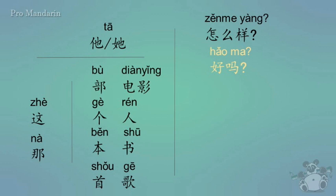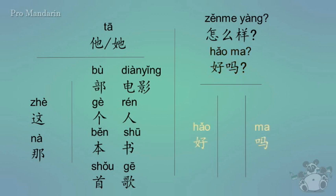You can use hǎo ma for any of the pronouns when talking about someone. Nǐ hǎo ma means how are you doing. Nǐ zěnme yàng means how are things going, or how are you doing. Now below that, we're going to split the hǎo and the ma up and put two different words in the middle.